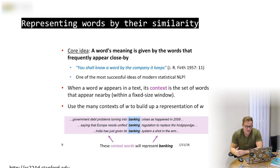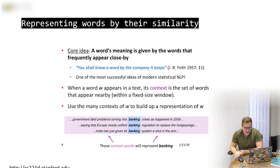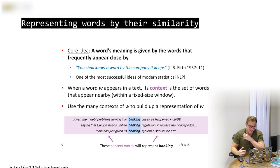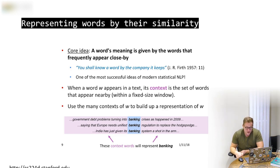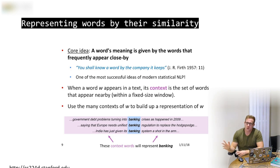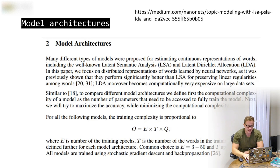The big idea is representing words by their similarity. There was an English linguist called J.R. Firth who said: 'You shall know a word by the company that it keeps.' This is one of the most successful ideas in modern NLP. The idea is that we look at words and their context words to represent them, and when we build a statistical model over an entire corpus, we can learn a wonderful geometric context for every single word.